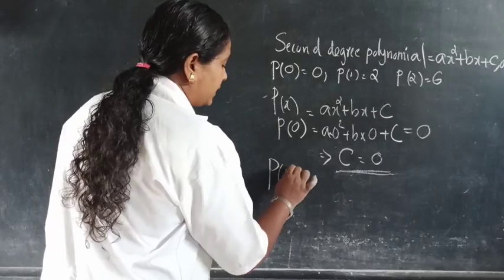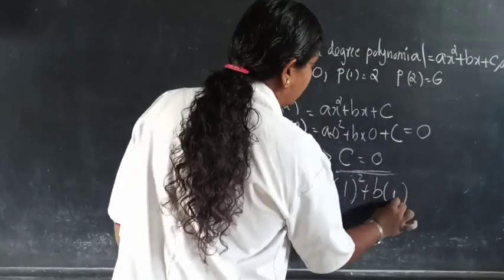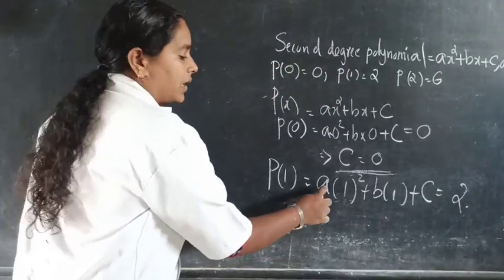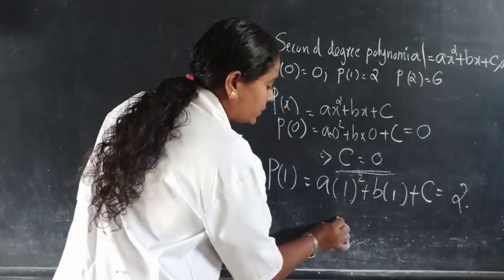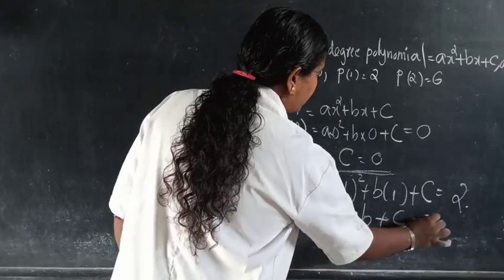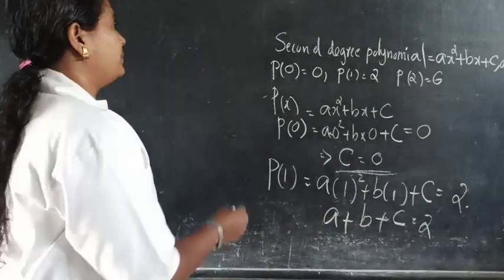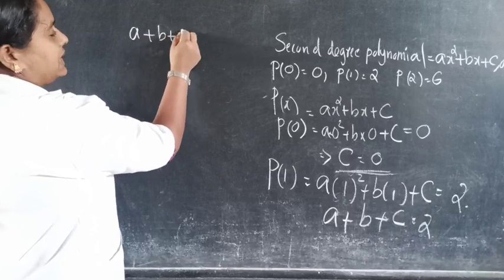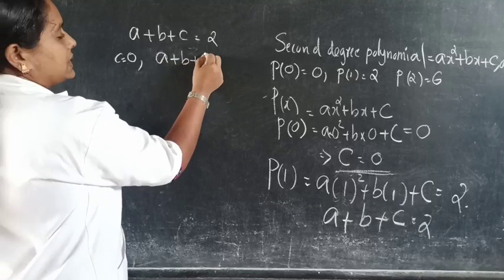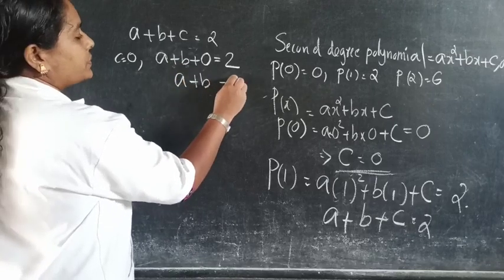Now applying p(1) = 2. We substitute x = 1: a into 1 squared plus b into 1 plus c. That gives a plus b plus c equal to 2. Substituting c = 0 here.